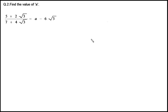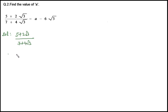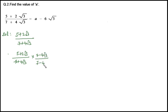Students, let's solve the second question. Here we have to find out only the value of A. The given question is (5 + 2√3) / (7 + 4√3). First, simplify the left-hand side by doing rationalization of the denominator. The rationalization factor is (7 − 4√3) / (7 − 4√3).